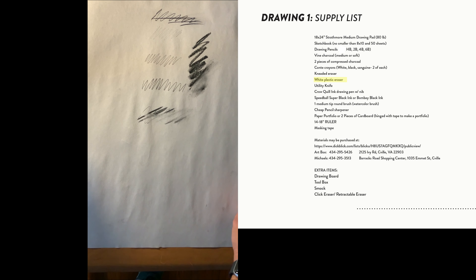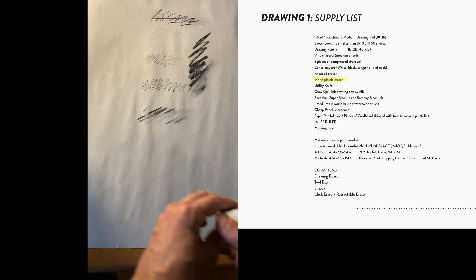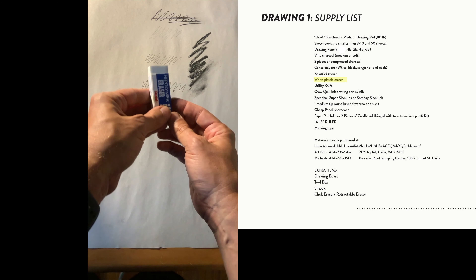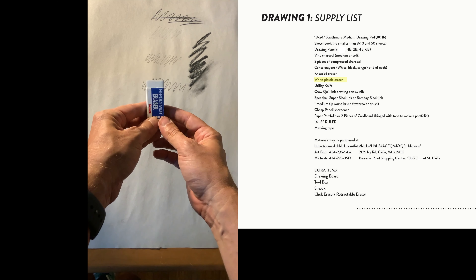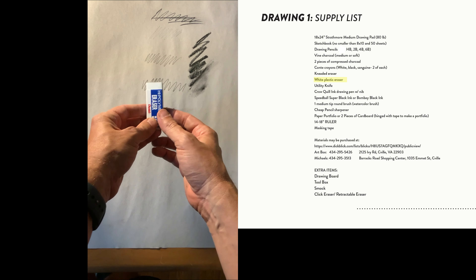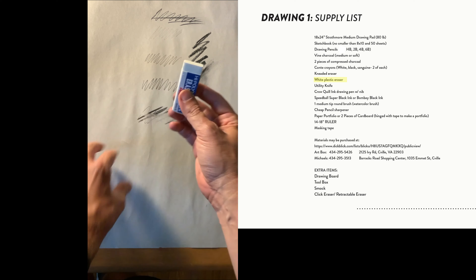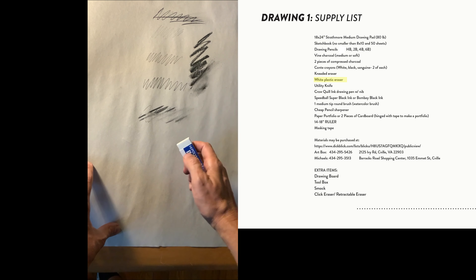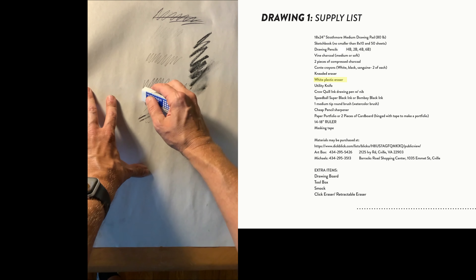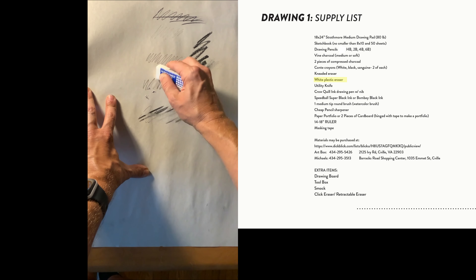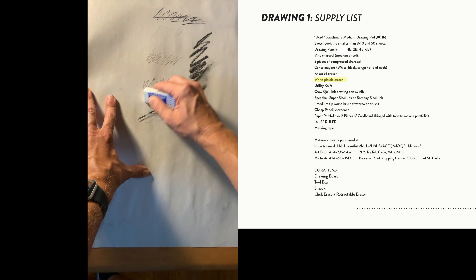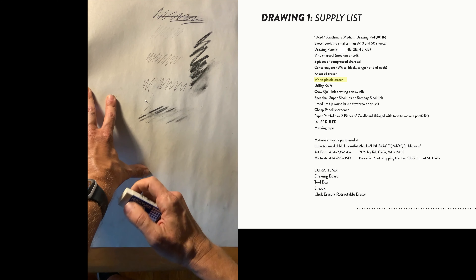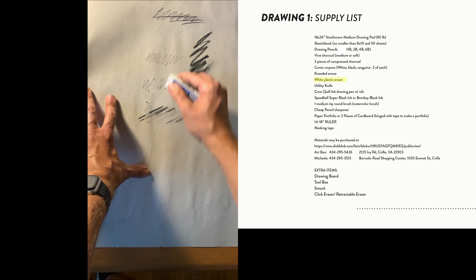Next is a white eraser or white plastic eraser — not a pink rubber eraser. A white eraser gives a clean erasure mark, especially on pencil marks.